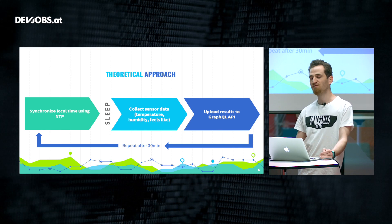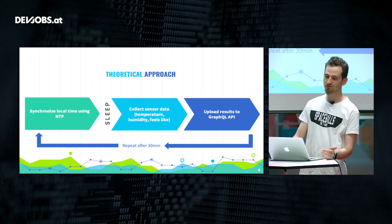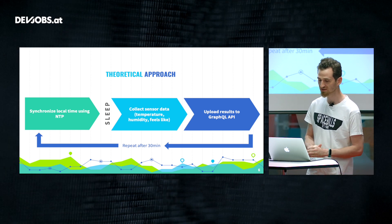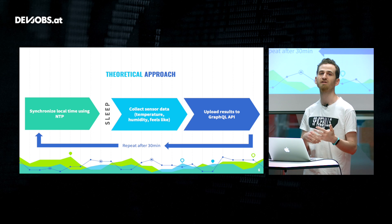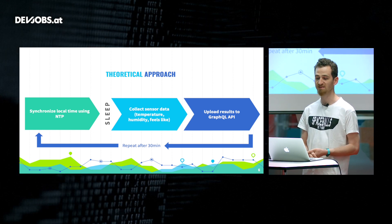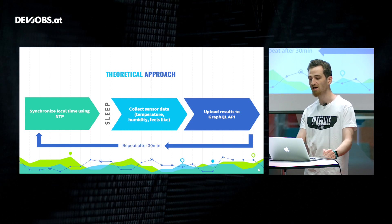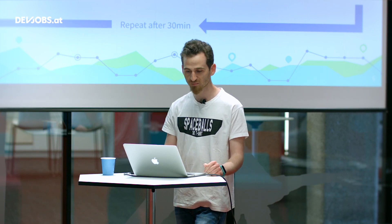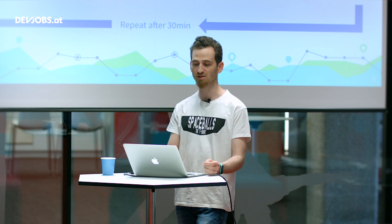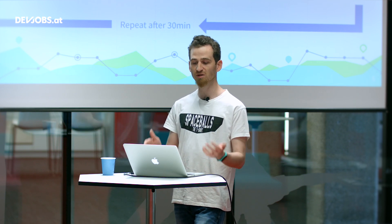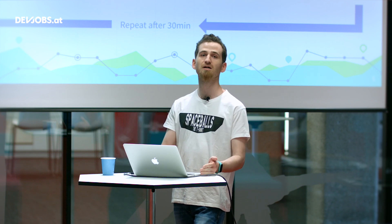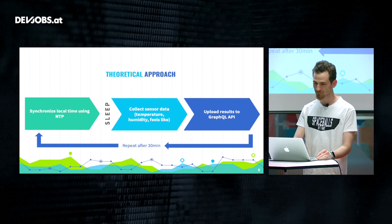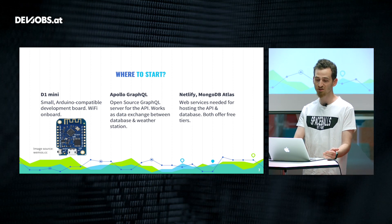The next step was to form a theoretical approach. First, I needed to get the current time using the NTP protocol because an Arduino doesn't have any local clock system. Then I needed to calculate the minutes before the next interval, collect the sensor data — temperature and humidity values — upload the results to the GraphQL API, and repeat every 30 minutes. The sleep phase is very important because it makes the station independent of power loss or gain by using a fixed interval based on universal time.